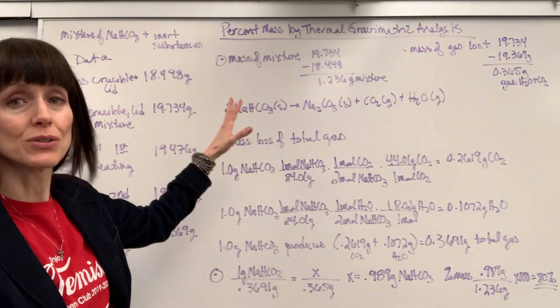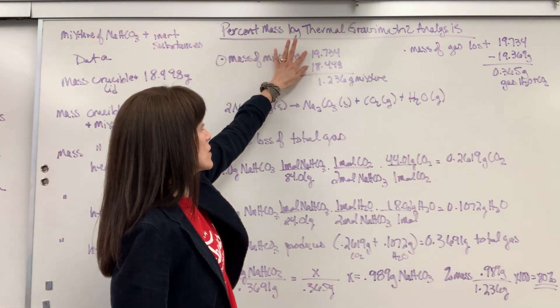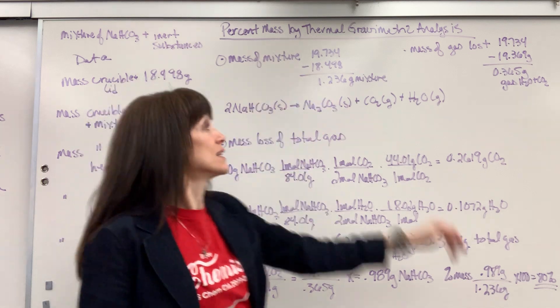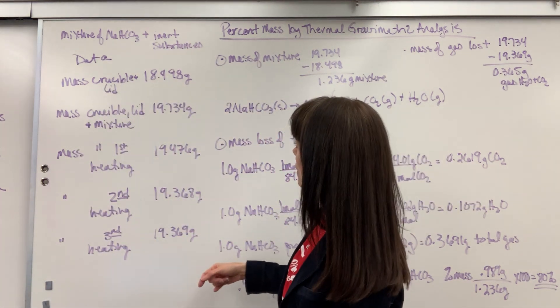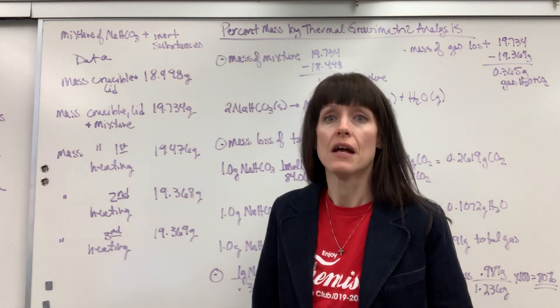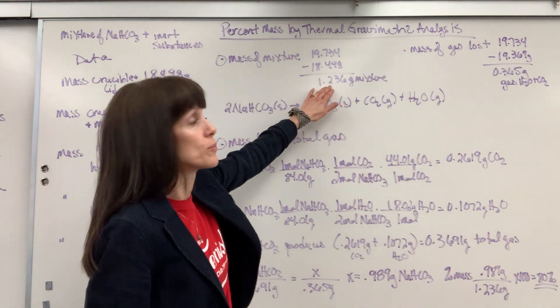Notice these two math problems. You're going to find the mass of the mixture. So you're going to take your initial mass of crucible, lid, mixture, and subtract the mass of just the crucible and lid. That's how much mixture you started with. So we started with a mixture of 1.236.